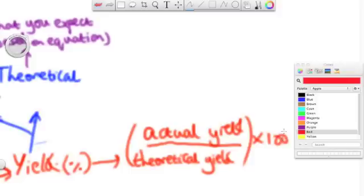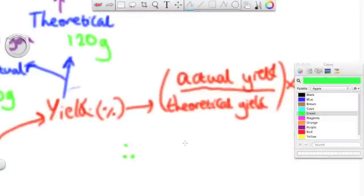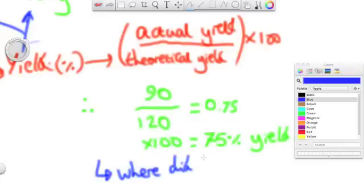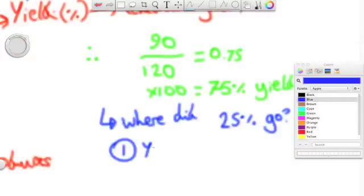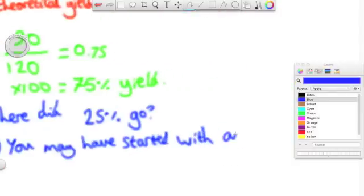To work out the percentage yield, or how much product you've got compared to what you should have got, you can divide your actual yield by your theoretical yield, and then times by 100. For example, if I had 90 grams of product formed, but I should have got 120, using the balance equation, then 90 divided by 120 is 0.75, times 100 is 75% yield, which is a pretty good yield.